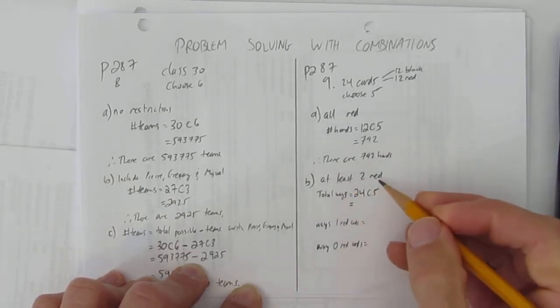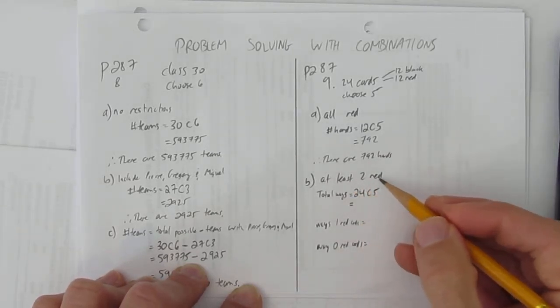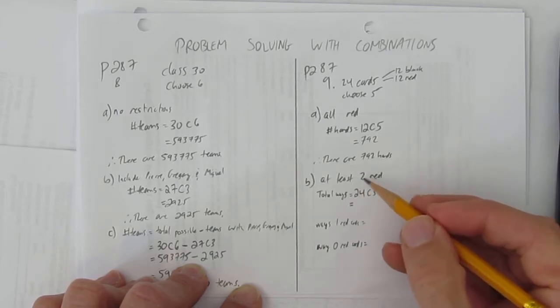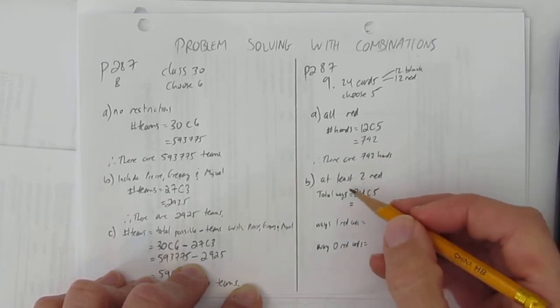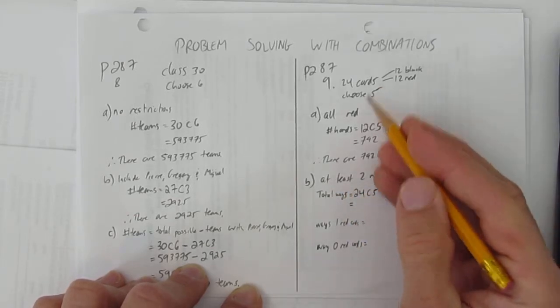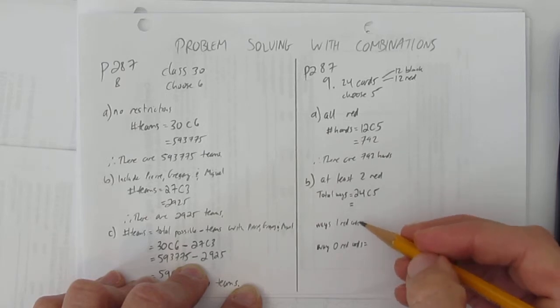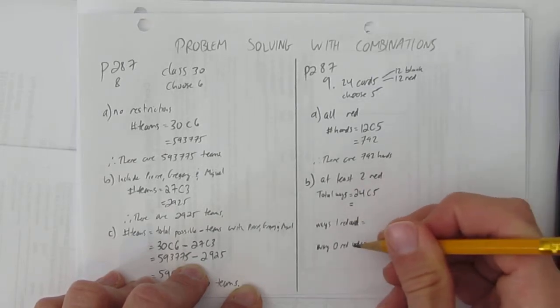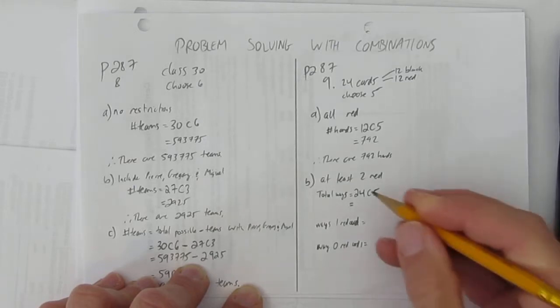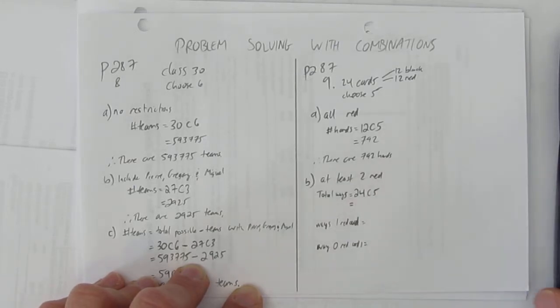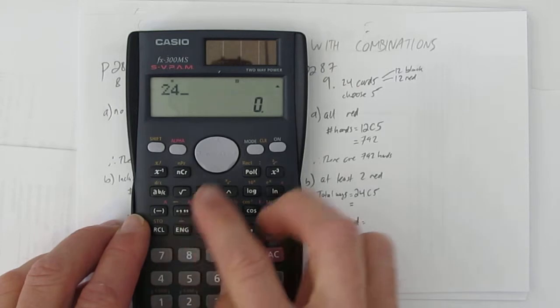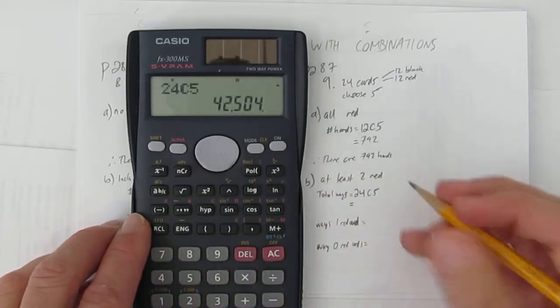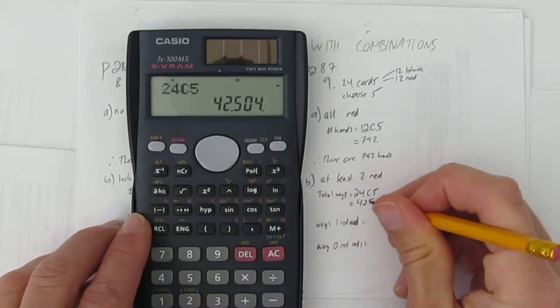Let's look at what I've set up here. I'm going to take, I want at least two red cards. So I could calculate, in four cases, how many ways could I have two red cards or three red cards or four red cards or five red cards and add them all together. But instead, I'm going to calculate how many possible hands are there and then subtract all the hands that have one red card or no red cards. So there are 24 choose five ways to have all the possible hands. That's 42,504.